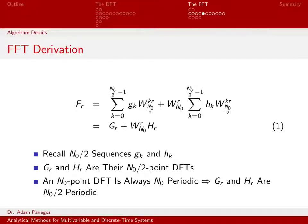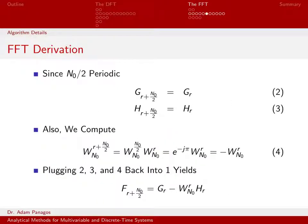Let's use the property that g(r) and h(r) are n_0/2 periodic, and we're going to use that to simplify Equation 1. Equation 1 says that f_r is equal to g(r) plus w_{n_0}^r times h(r). Let's use the property that g(r) and h(r) are n_0/2 periodic. What that means is for some fixed value of r, g(r) is equal to g_{r + n_0/2}.